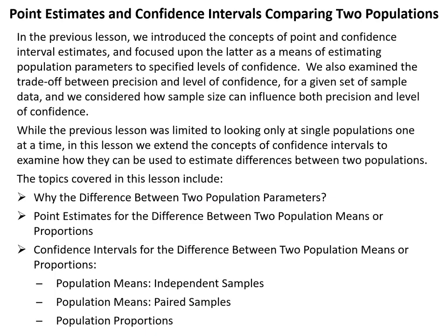In the previous lesson we introduced the concepts of point and confidence interval estimates and focused upon the latter as a means of estimating population parameters to specified levels of confidence. We also examined the trade-off between precision and level of confidence for a given set of sample data, and we considered how sample size can influence both precision and level of confidence. While the previous lesson was limited to looking only at single populations one at a time, in this lesson we extend the concepts of confidence intervals to examine how they can be used to estimate differences between two populations.